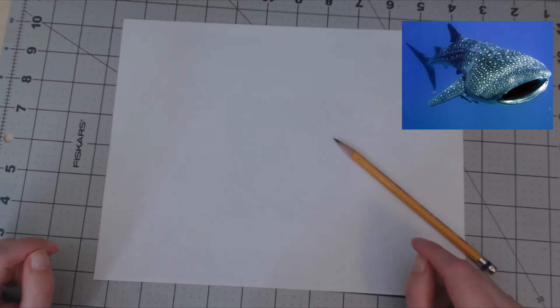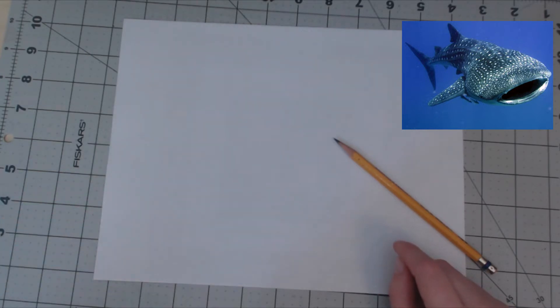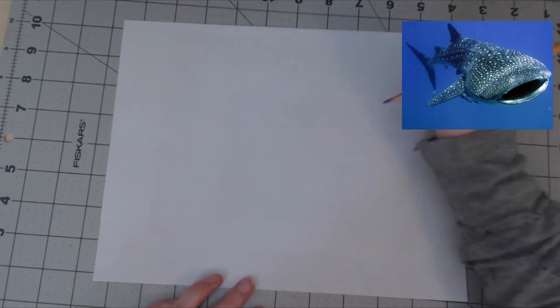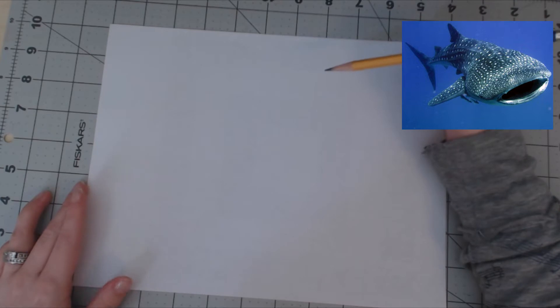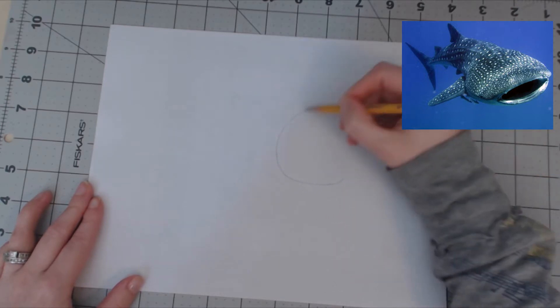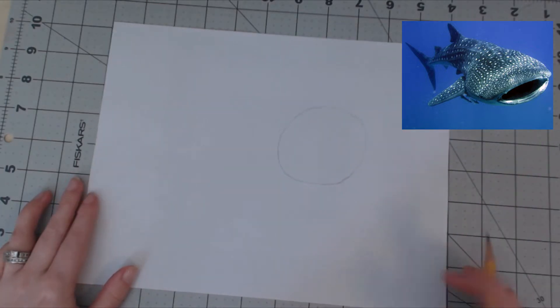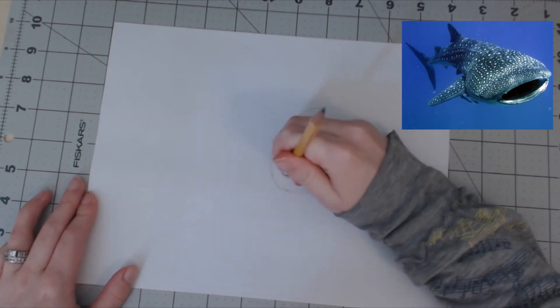Let's get started. I'm using a reference photo for this video, so I'll put that up on the screen for you. I can't draw a whale shark from memory, so I'm using this image to help us along with this tutorial. If we look at his head, it's definitely a circle, so we're gonna start with that circle.